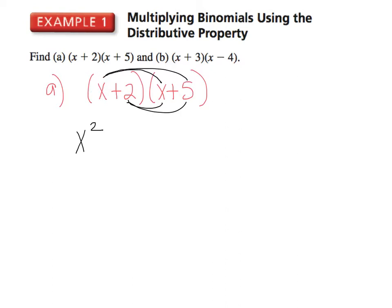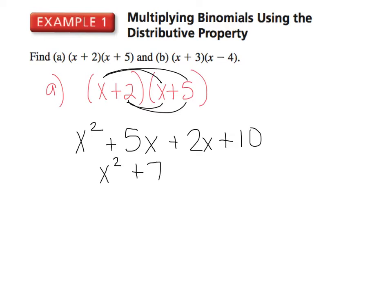Then take x times 5 to get 5x. Then distribute the 2: 2 times x and 2 times 5 gives 2x plus 10. The next step is to simplify like terms and put it in descending order — standard form. x squared, then combine 5x plus 2x into 7x, plus 10. Your answer is a trinomial: x squared plus 7x plus 10.